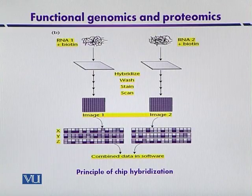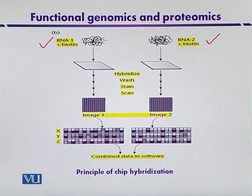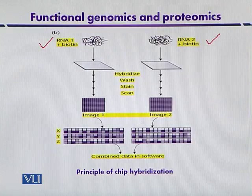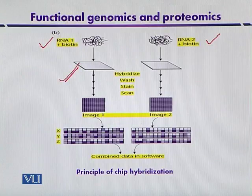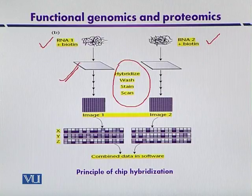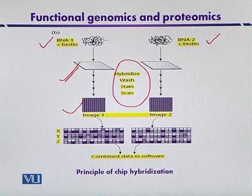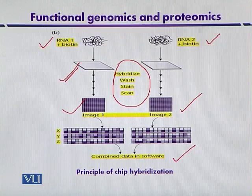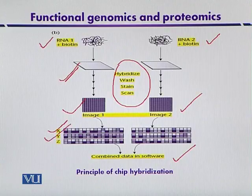In the next step, we analyze two RNA populations — RNA population 1 and RNA population 2. These two populations can be labeled with biotin and then detected after hybridization. The labeled RNA populations will be hybridized on the solid surfaces that contain the already-synthesized gene segments. After hybridization, we perform a washing step, then staining and scanning, to get images from RNA population 1 and RNA population 2. These images can be combined with software to analyze which genes belong to each category.